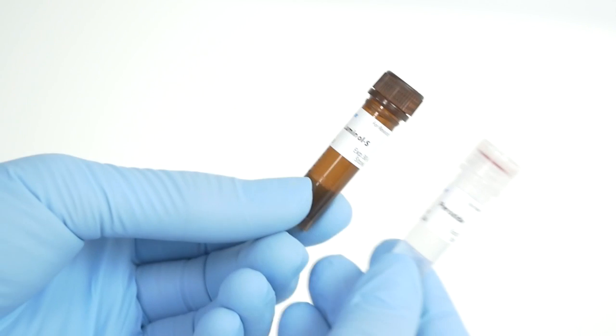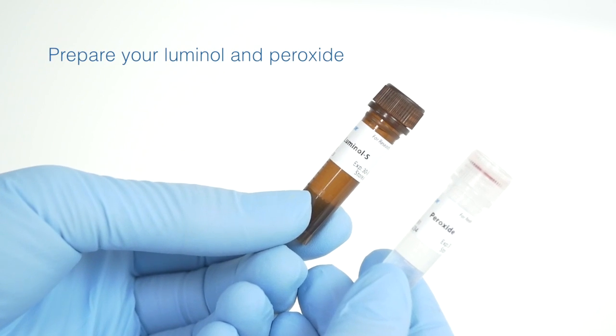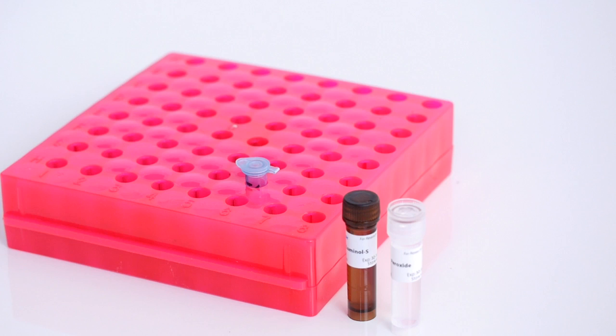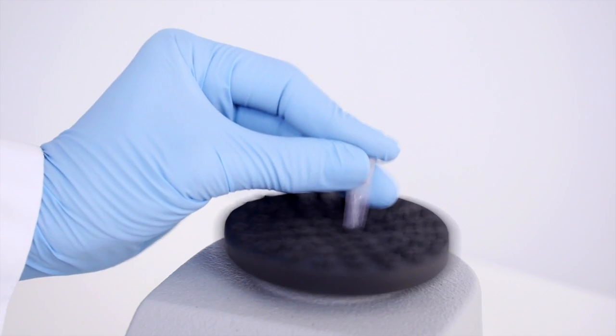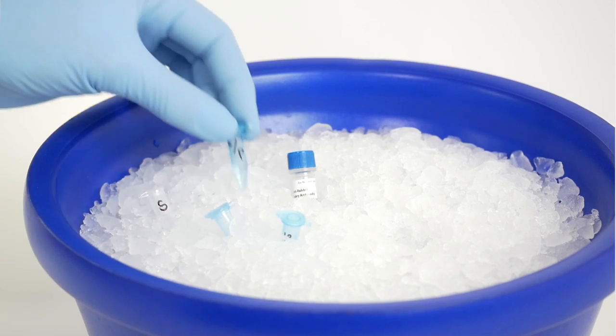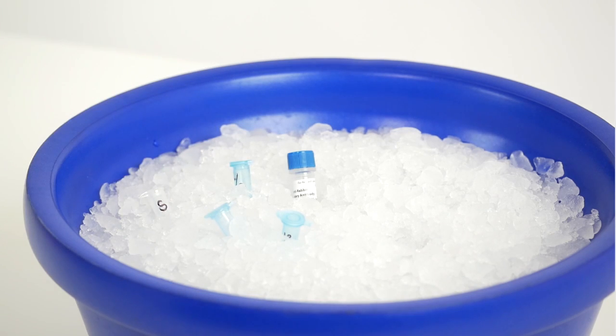And finally, the last thing you'll want to do is prepare your luminol and peroxide. All you'll need to do is combine 150 microliters of each into a microcentrifuge tube and then vortex and place on ice. And that's it. Wasn't that simple?